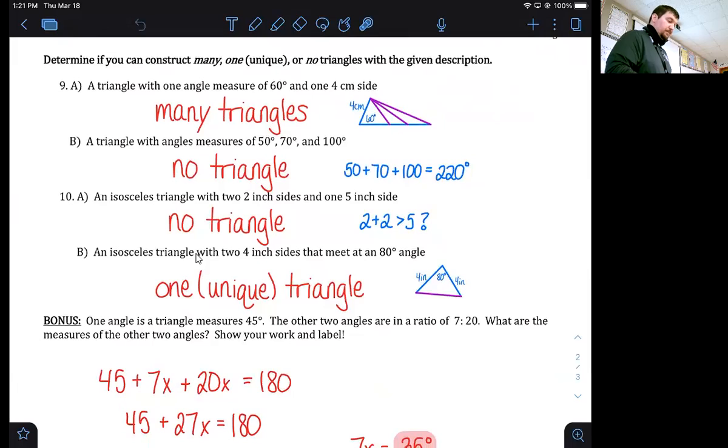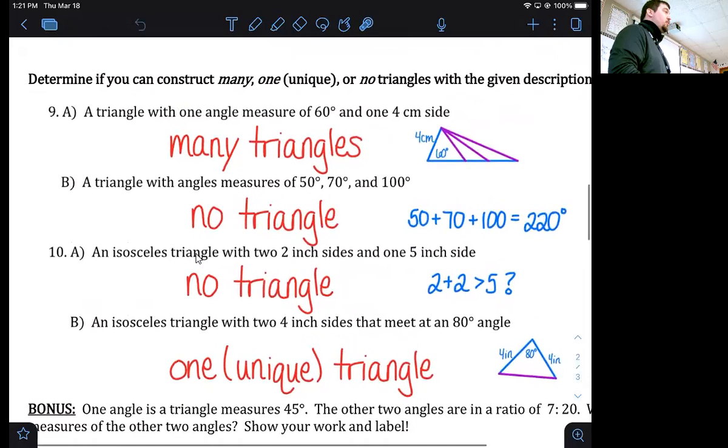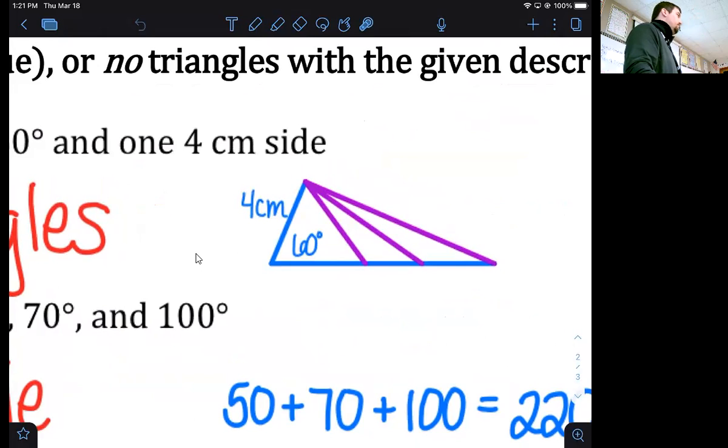On the back side of the quiz, number nine was many triangles. You were only given two angle descriptors - one referencing the angle being 60 degrees and another one having a four centimeter side. I can make many triangles with those descriptions. No one said how long that other side had to be. I know this one's four centimeters, but this purple one and this blue one could be whatever length they want to be.